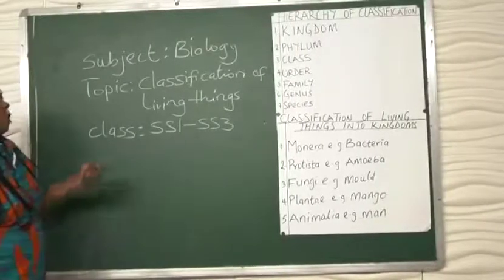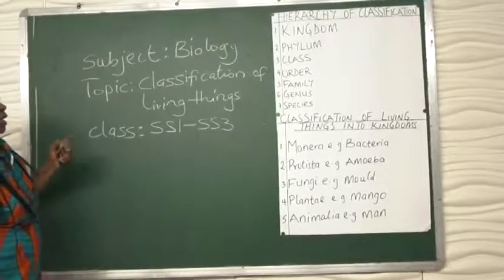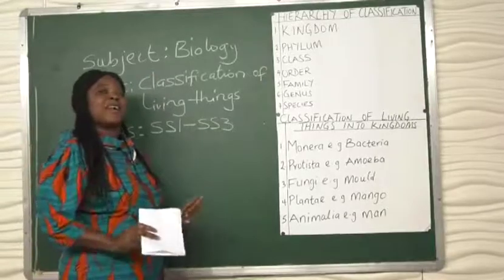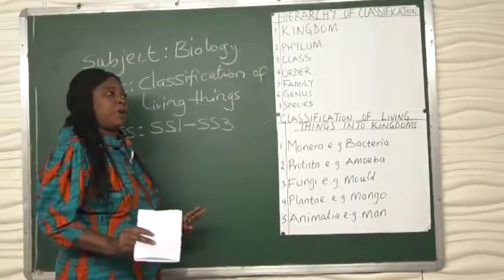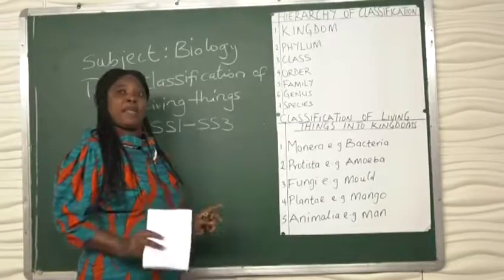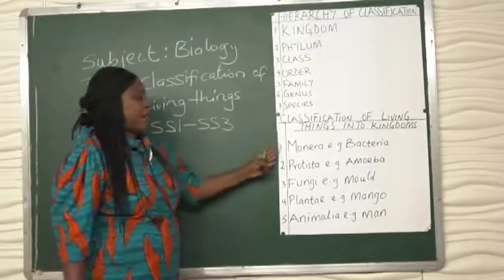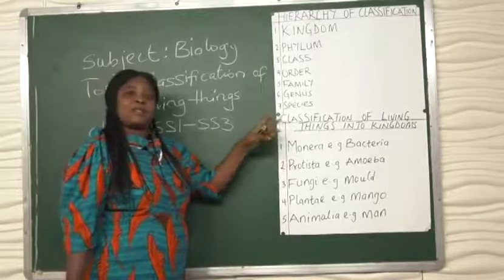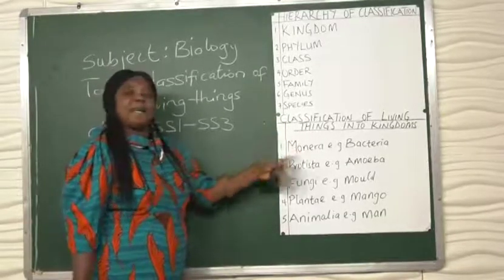Then, we move down to classification, to explaining the kingdom. The kingdom, as we said, is a very large group and encompasses a large number of organisms, such as the monera. An example of that group, a monera, is bacteria.